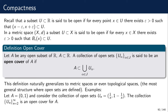This definition naturally generalizes to metric spaces and even topological spaces. We haven't defined what a topological space is yet, but basically a topological space is the most general context in which we can talk about open sets.